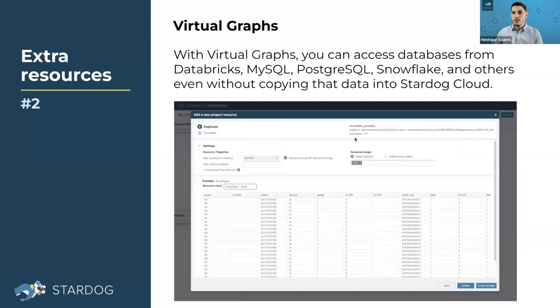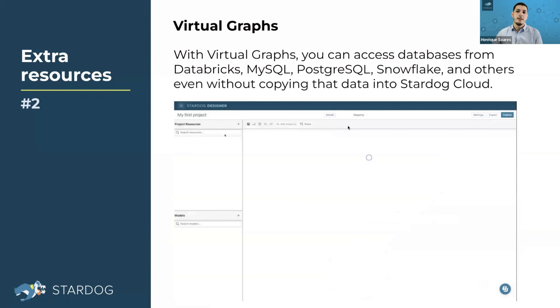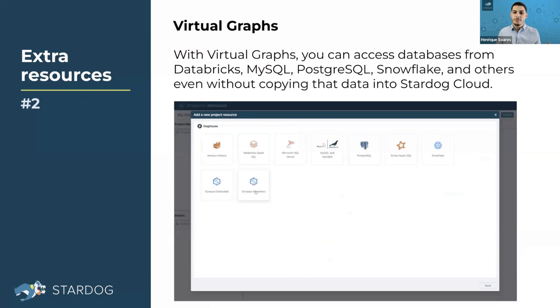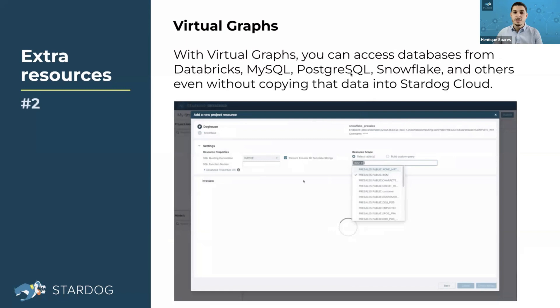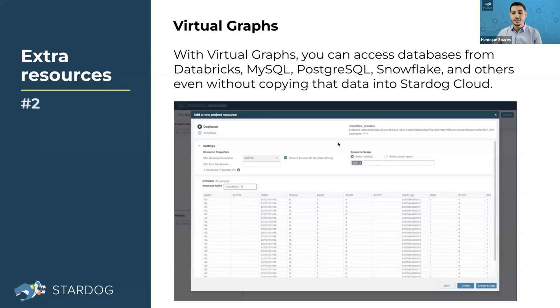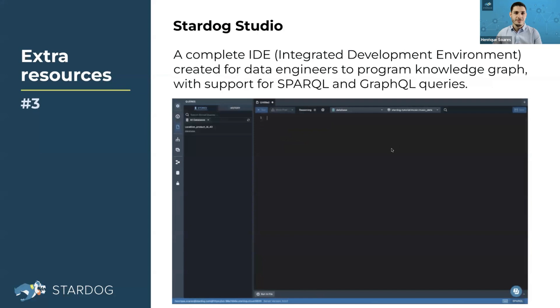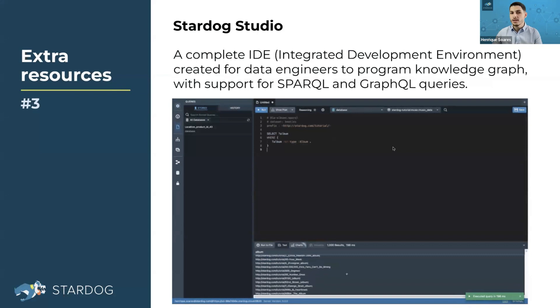Stardog Cloud also supports Virtual Graphs, so you can access databases from Databricks, MySQL, PostgreSQL, Snowflake, and many others without copying data into Stardog Cloud. You'll always get the most up-to-date results in Explorer. We also have Stardog Studio — a complete IDE for data engineers to program knowledge graphs with support for SPARQL queries and GraphQL. It's a more advanced environment, but you can go even further using Stardog Studio.